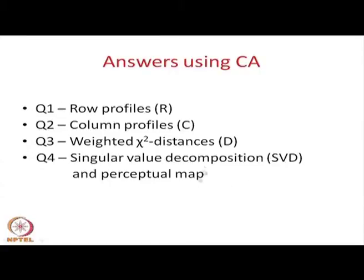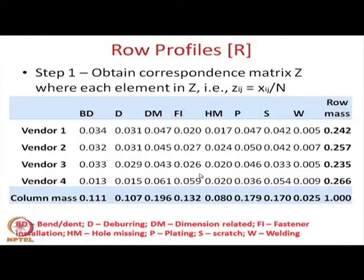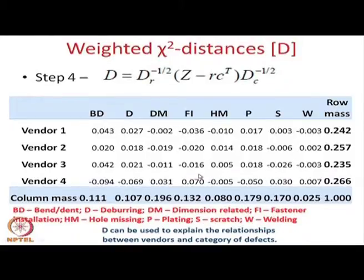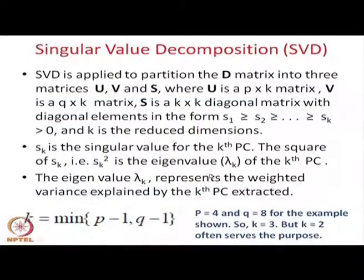Singular value decomposition is similar to eigenvalue and eigenvector decomposition of a matrix, but eigenvalue-eigenvector decomposition is only possible when the matrix is square. When the matrix is rectangular, that decomposition is not possible. So we go for singular value decomposition, which decomposes a rectangular matrix into different vectors and scalar quantities.